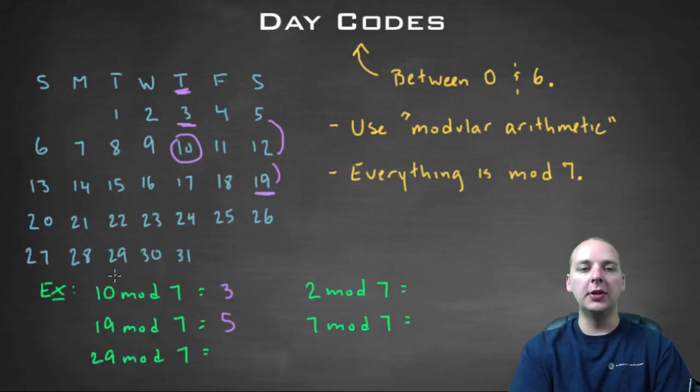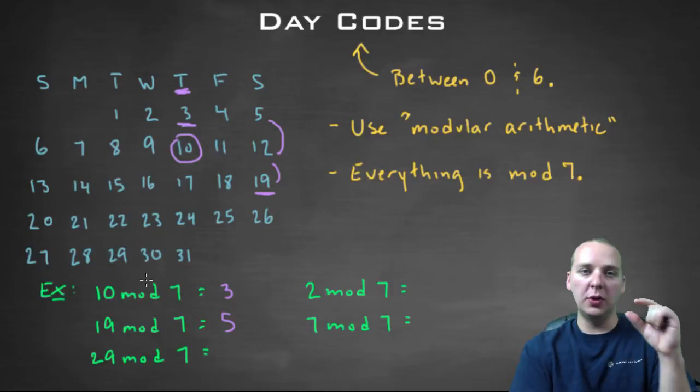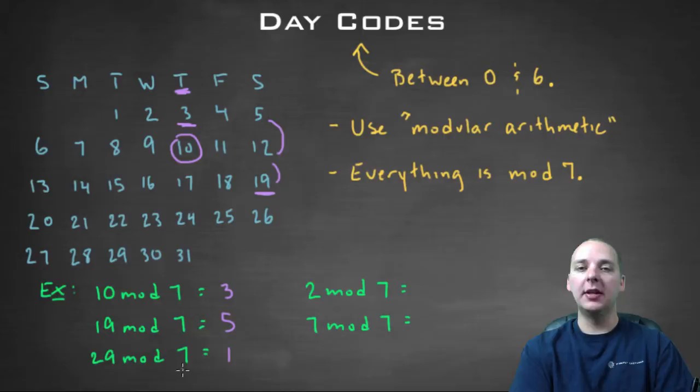Alright, how about you do the next one? Twenty-nine modulo seven. If you take out as many multiples of seven as you can, what's the greatest multiple of seven that comes right before twenty-nine? And then what's that remainder that's left over? It should be one. Seven times four is twenty-eight, with a remainder of one.